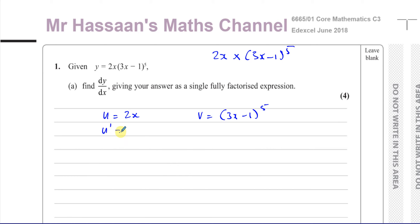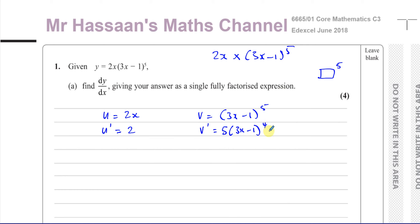We differentiate the first part, which gives us 2 with respect to x. For the second one with respect to x, we use the chain rule. The main function is something raised to the power of 5. You multiply by the power, take one from the power, and multiply by the differential of what's inside. So you end up with 15 times (3x minus 1) to the power of 4. That's what v'(x) is equal to.